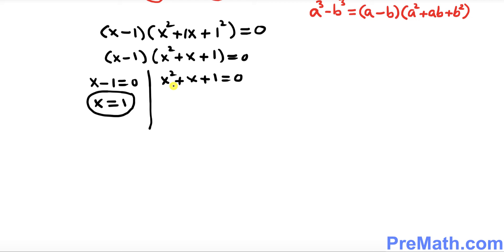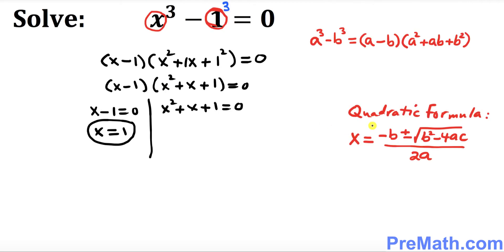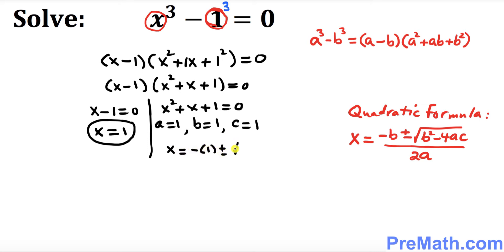Here is the quadratic formula we will be using. In this case the coefficients are: a equals 1, b equals 1, and c equals 1 as well. Let's go ahead and plug it in. So x equals negative b, which is 1, plus or minus the square root of b squared — that's 1 squared — minus 4 times a, which is 1, times c, which is 1, all divided by 2 times 1.